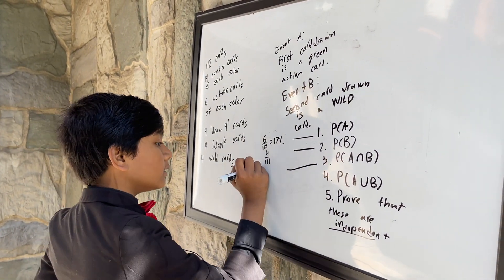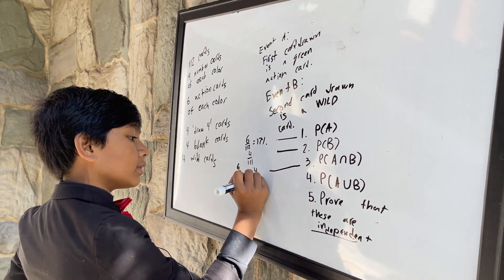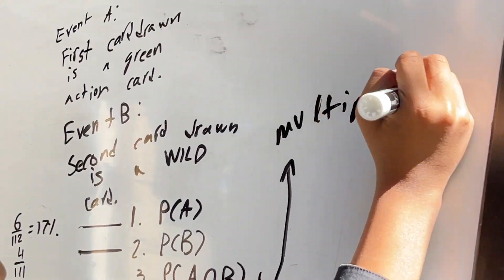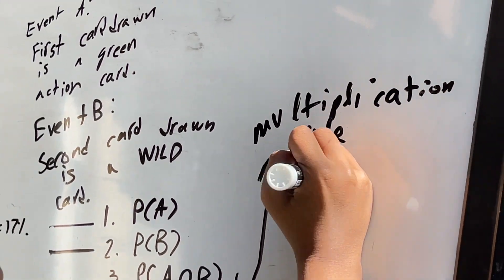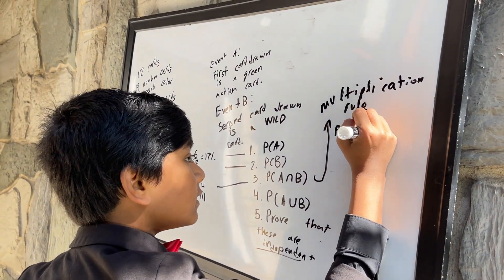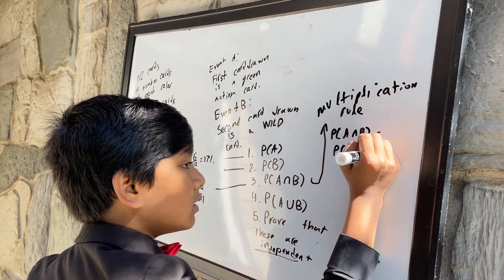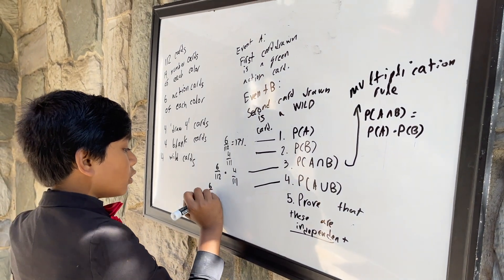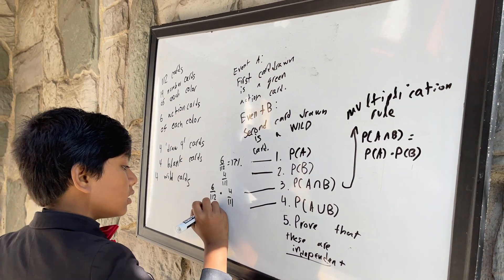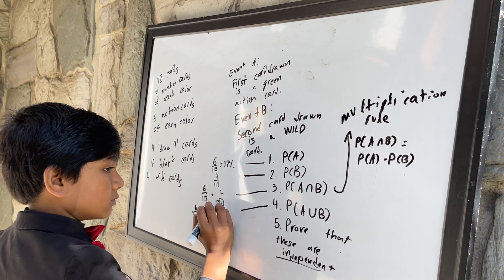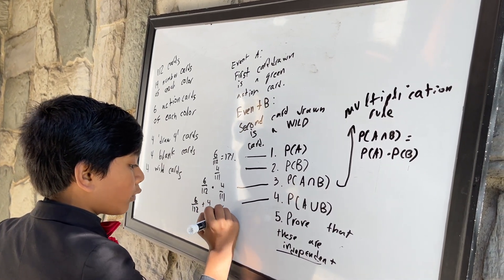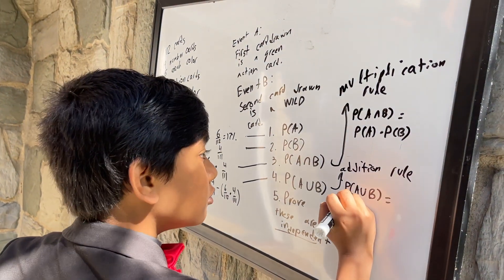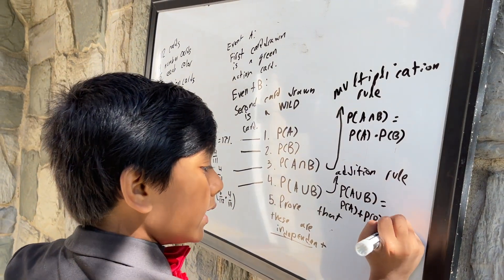P of A and B would be six over 112 times four over 111. This is known as the multiplication rule, where P of A and B equals P of A times P of B — but that changes with dependent events. For P of A or B, that would be six over 112 plus four over 111 minus P of A and B, which is six over 112 times four over 111.